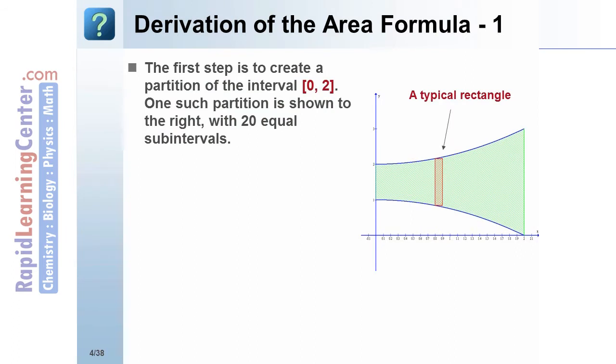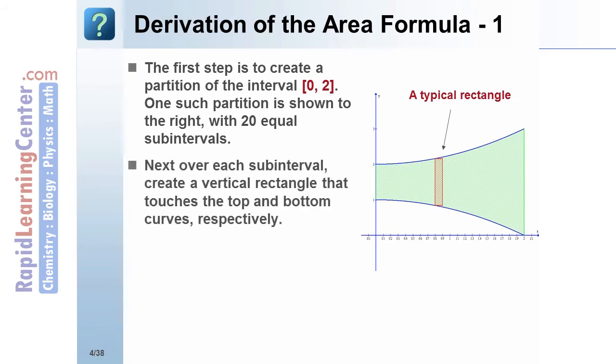Derivation of the area formula. The first step is to create a partition of the interval [0, 2]. One such partition is shown to the right with 20 equal subintervals. Next, over each subinterval, create a vertical rectangle that touches the top and bottom curves respectively. In the graphic to the right we see a typical rectangle.